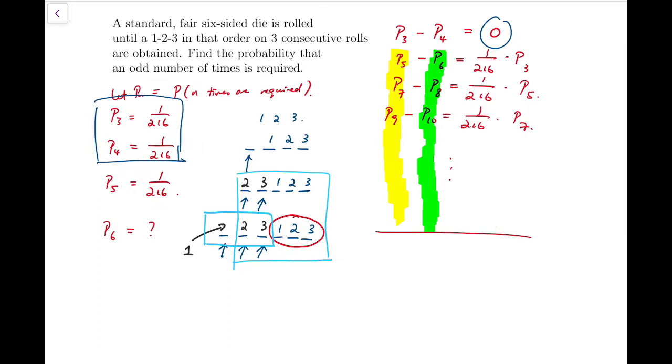So after adding, we will get, say, P_odd and then minus P_even equals 1 over 216 times P_odd. Now we can further simplify by rewriting P_even actually into P_odd, because the number of times required is either odd or even. So we now have come to an equation on our answer. So we can simplify and solve it.